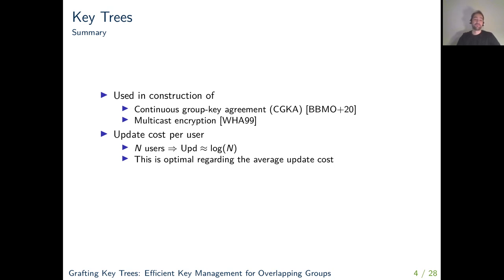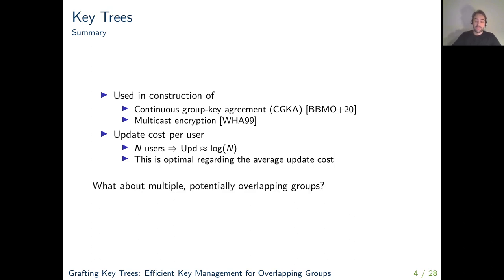As we have seen, the update cost of key trees is logarithmic in the number of users, and this actually turns out to be optimal with respect to average update cost — meaning that if we have a key tree, the average update cost for a user must be at least log n. The question we are interested in is: what is the situation if we have multiple, potentially overlapping groups? Can we find more efficient solutions?